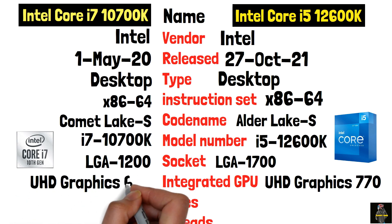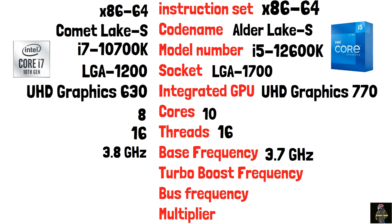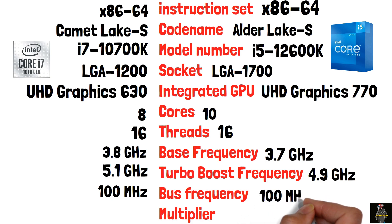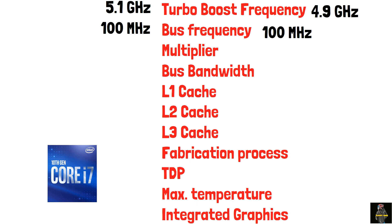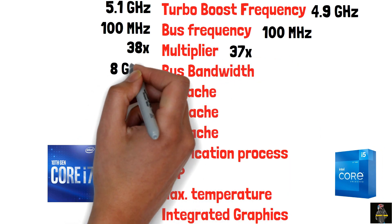The i7-10700K has Intel UHD Graphics 630. Core counts are 8 cores and 16 threads for the i7-10700K, and 10 cores and 16 threads for the i5-12600K. Base clocks are 3.8 GHz and 3.7 GHz respectively, with boost clocks of 5.1 GHz and 4.9 GHz. Bus speed is 100 MHz for both. Graphics speed is 8 GT/s.